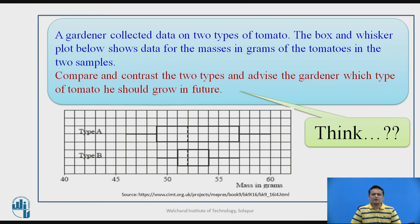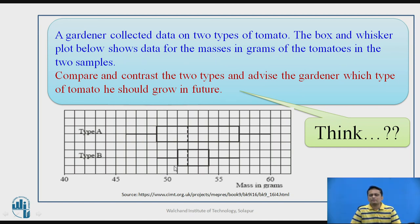Now think over this problem. A gardener has collected data on two different types of tomatoes. You have two box and whisker plots — one for type A tomatoes and one for type B tomatoes — showing the mass observed for each type. Use your knowledge of box plots and univariate statistical parameters to compare and contrast these two types, and advise the gardener which type of tomato to grow.